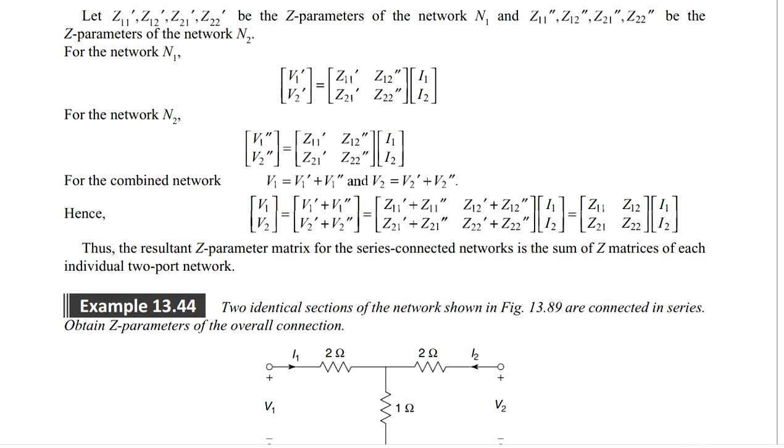Now what we do, we will just consider V1 V2 matrix, which is a column matrix. And what is that? V1 prime plus V1 double prime, V2 prime plus V2 double prime. From equation 1 and equation 2, we can write this.